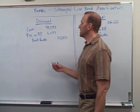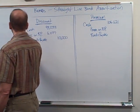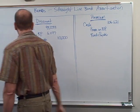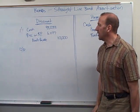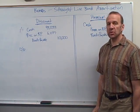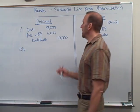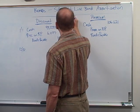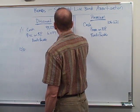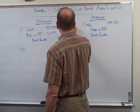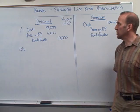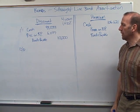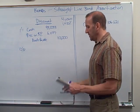This takes place on January 1st, and then on December 31st of this year we're going to be recording the interest. Interest is paid out at ten percent. These are four year bonds, so it's going to go on for four years. And our interest — this is our contract rate interest — is going to be ten percent, so they're going to pay out ten thousand dollars.